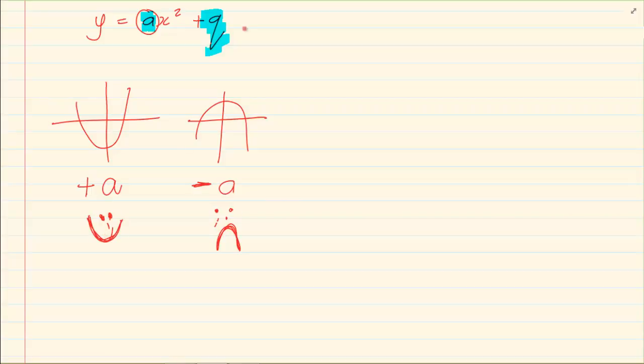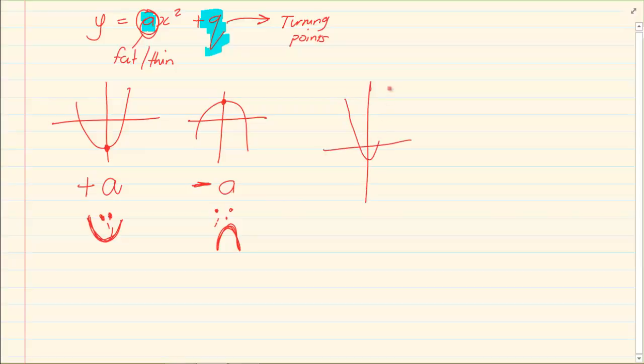What does each thing represent? The q represents our turning points, so it would usually refer to something on this line. The a represents how fat or thin I am - thin graph, wider graph, thin or fat, narrow or wide. That is what that a does to you.